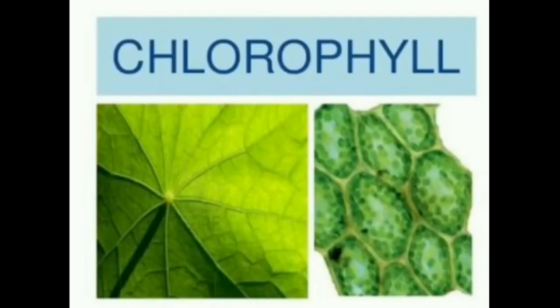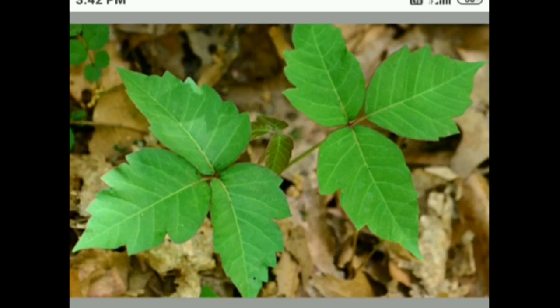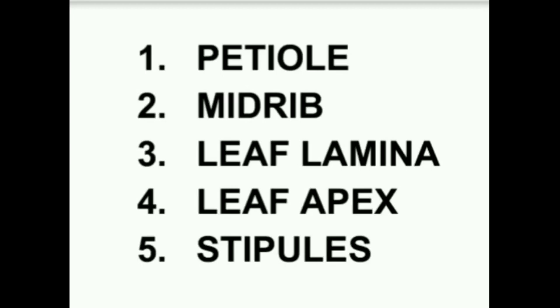Why are they green in color? Due to the presence of chlorophyll. Chlorophyll is a green pigment which gives green color to the leaves. The leaf has five main parts. What are they? One: petiole. Two: midrib. Three: leaf lamina. Four: leaf apex.